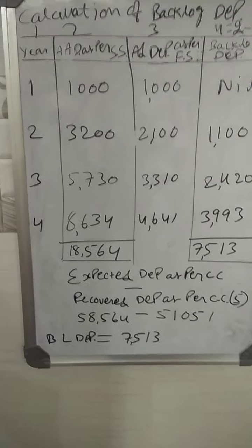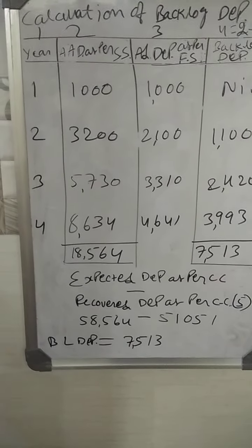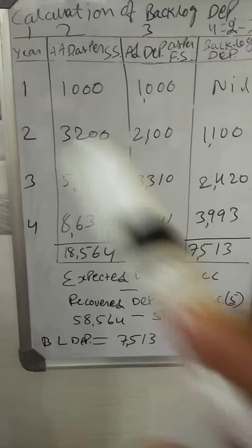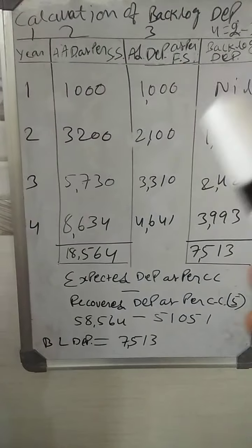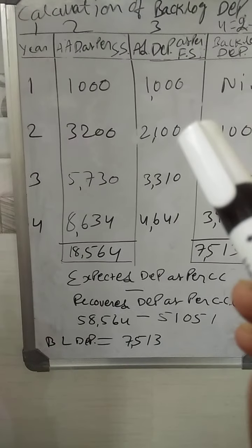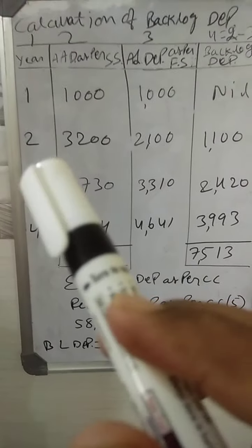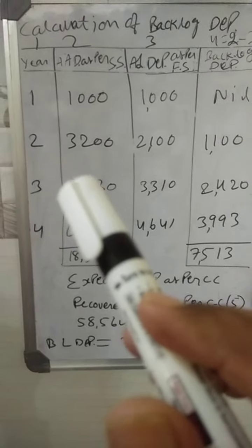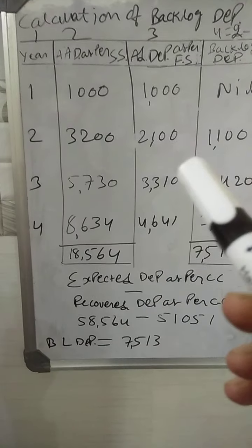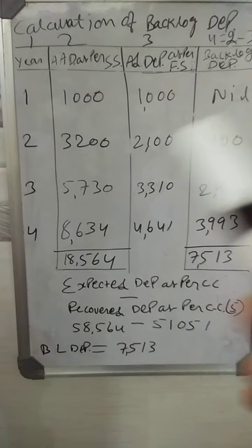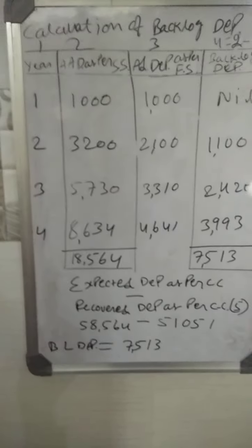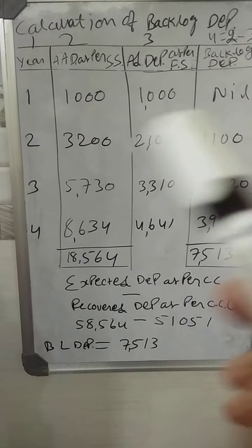For the first year: 1,000 minus 1,000 — second column minus third column — gives nil. For the second year: 3,200 minus 2,100 gives 1,100.